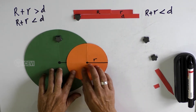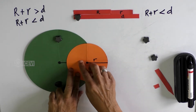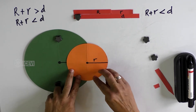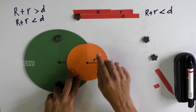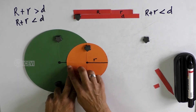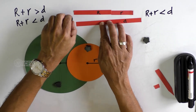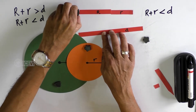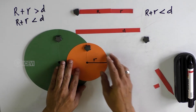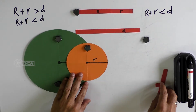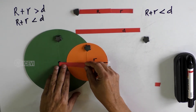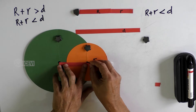Let us take another example. Here we have the situation when one circle has an overlapping area with the other — that is, one circle is intersecting with the other. The radius has not changed; the radius of the big circle and the radius of the small circle remain the same. Now we have to find out the new distance between the centers of the circles.